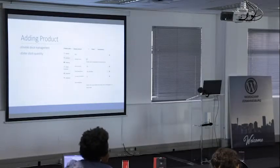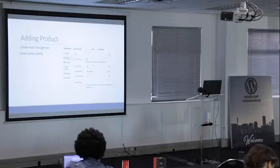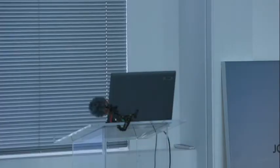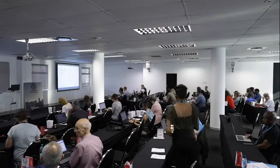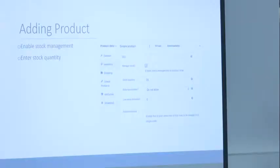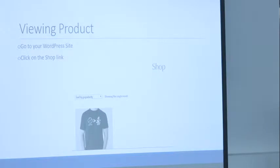There are other things you can add, but because we don't have much time I'll skip to adding an image. On the right panel of your product post there's a section called Product Image. Go to Product Image and upload or set a product image. You can also add more images for that product using the Product Gallery section, where you can add multiple images linked to your product. Then you can publish your product.